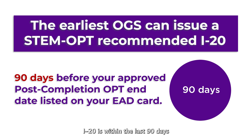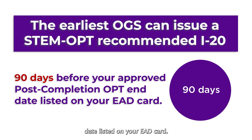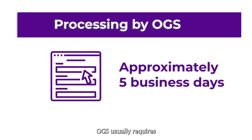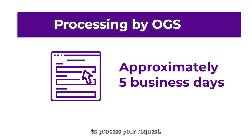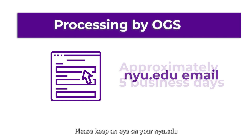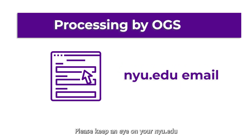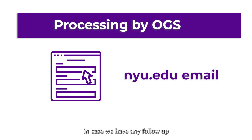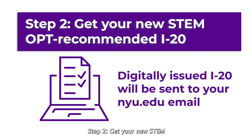The earliest OGS can issue a STEM OPT recommended I-20 is within the last 90 days of your approved post-completion OPT dates listed on your EAD card. OGS usually requires approximately 5 business days to process your request. Please keep an eye on your NYU.edu email in case we have any follow-up questions about your application.